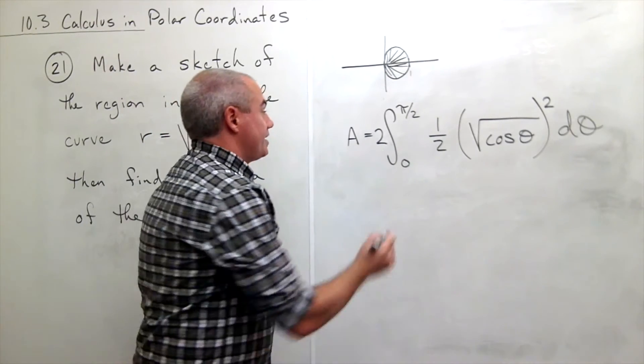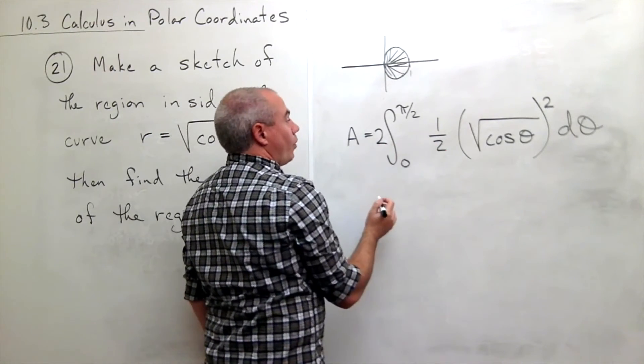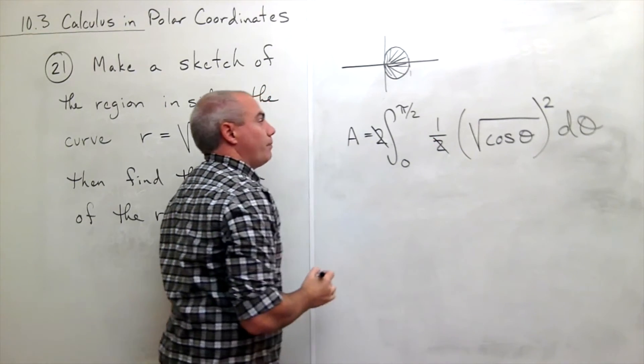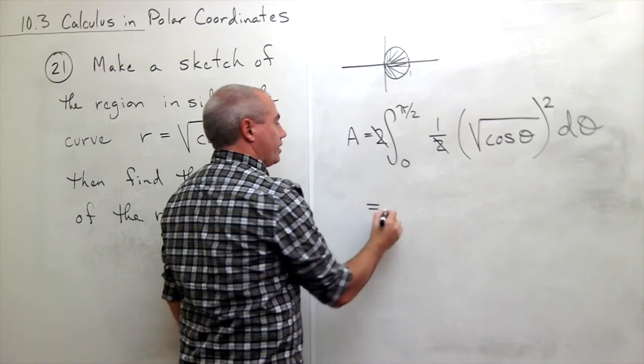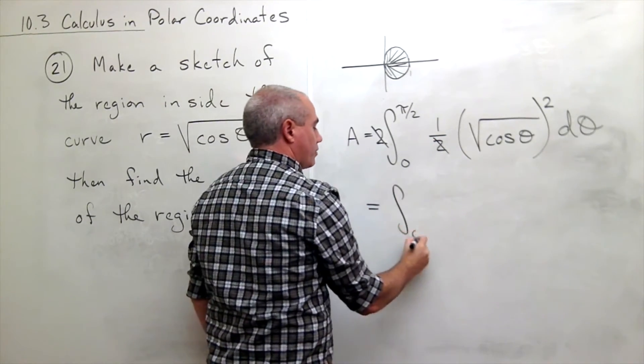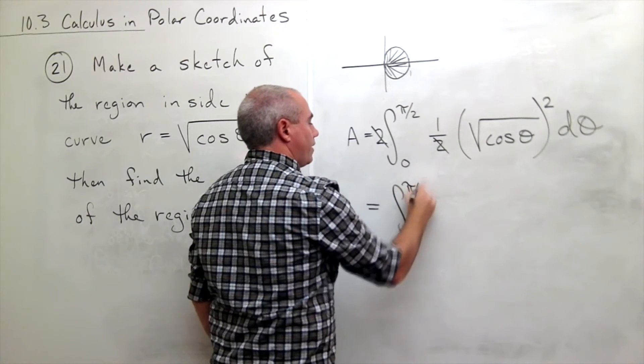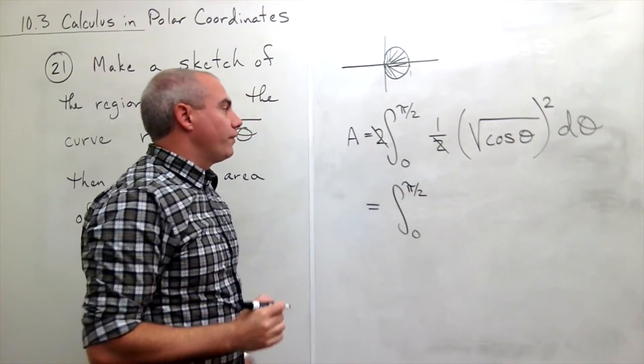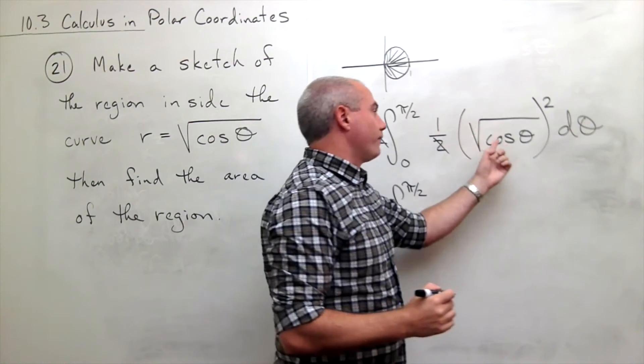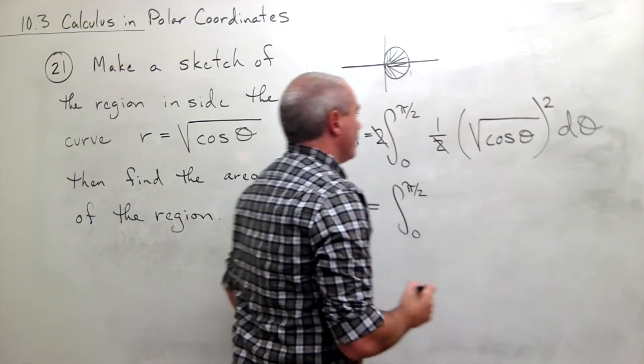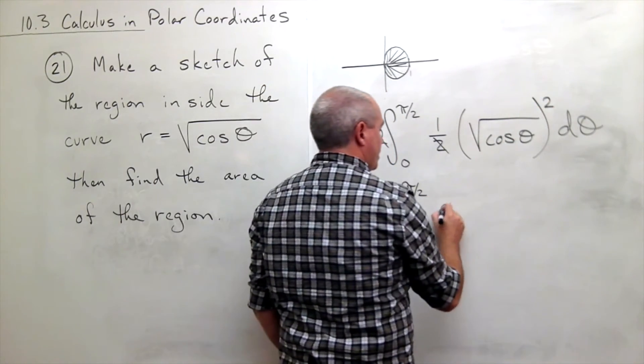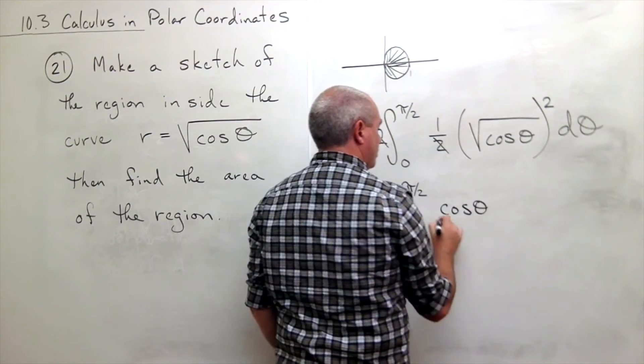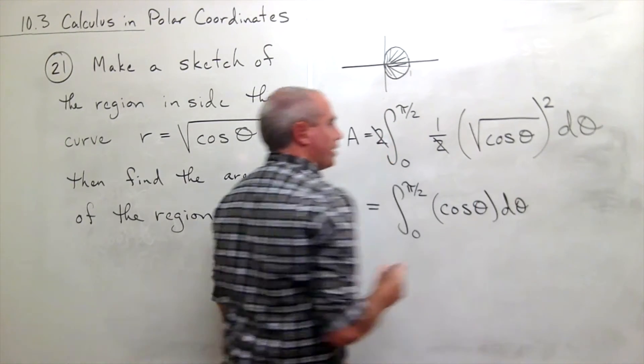Now I see I have a two, I see I will have a one half, so that two and that two on the bottom will cancel. And I'll get that my area is equal to the integral from zero to pi over two of the square root of cosine squared, so that would just be cosine theta d theta.